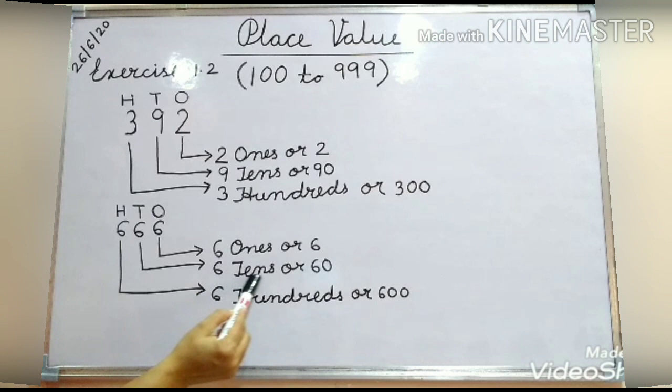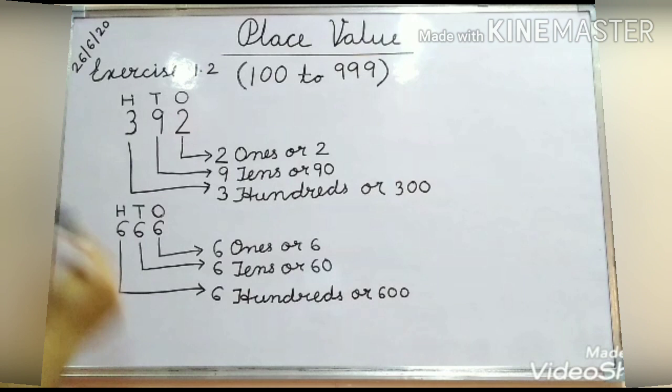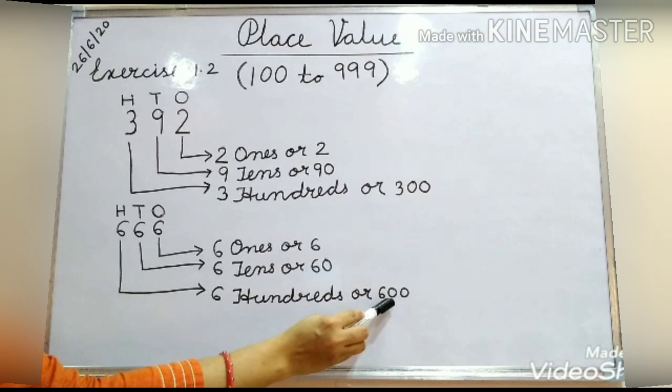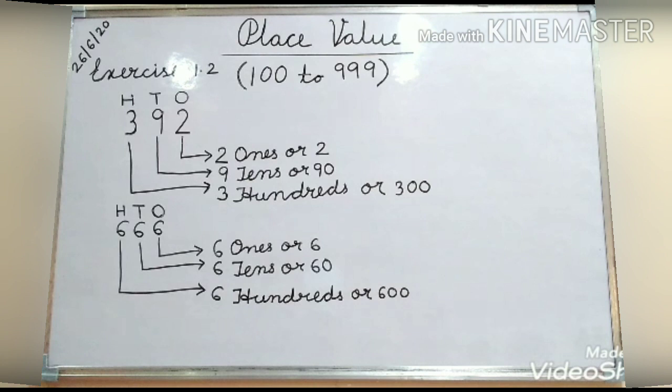Now in the second one, 6 is at 10's place, so the value will be 6 tens, or in digits that is 60 — 2 digits are there at 10's place. In 100's place, the value will be 6 hundreds. In numbers, 6 with 2 zeros — that is 600. These are the values of these digits. Clear?